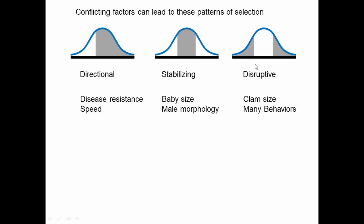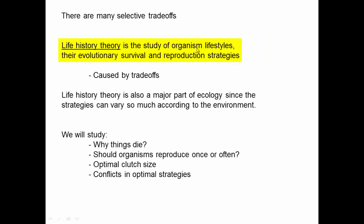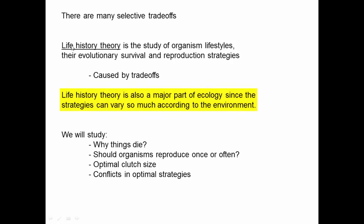In this life history theory part of the course, we'll think about these types of selection and the factors that lead to them, approaching fitness in a more sophisticated way. Life history theory is the study of organism lifestyles, evolutionary survival and reproduction strategies. It's complex because of these trade-offs, and it's a major part of ecology because many strategies are environment-dependent. In this course, we'll study four aspects: why organisms die, whether organisms should reproduce once or often, optimal clutch size, and conflicts in optimal strategies between different individuals.